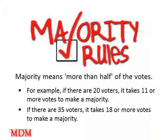For example, if there are 20 voters, it takes 11 or more votes to make a majority. Half of 20 is 10, and we need more than that, so the next number is 11. Generally we think of that as half plus one — 50 percent plus one. If there are 35 voters, it takes 18 or more votes to make a majority. When we take 50 percent of 35 we get 17 and a half, so we go to the next whole number: 18 or more votes would be necessary to make a majority.